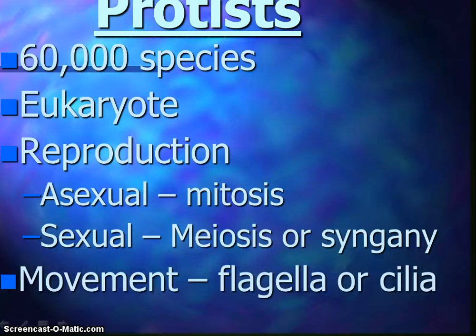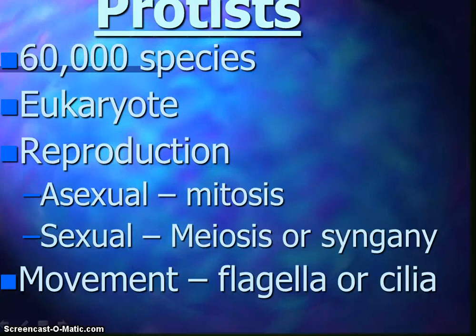They can move — they have flagella and cilia at some point in their life. This is very different from monera. Eukaryotes have flagella as extensions from the cytoplasm, and it's bundles of microtubules covered by the plasma membrane.